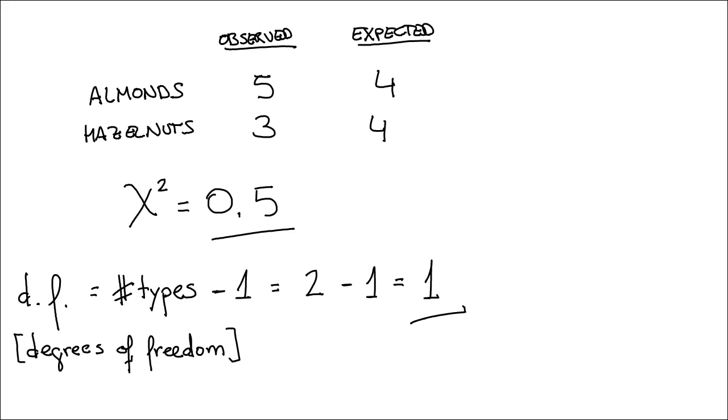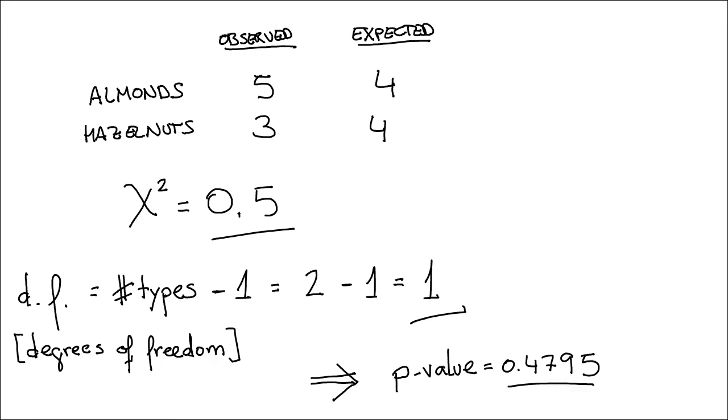Using the appropriate software, as we will do in a second, we will find the associated p-value. In our case, the p-value is way above 0.05, so we have no reason to doubt that half of the nuts are almonds and the other half are hazelnuts in the pot. This test is known as the chi-square test for goodness of fit. You should be aware that there are other, more accurate tests of goodness of fit, but for now chi-square will do most of the things you may need.